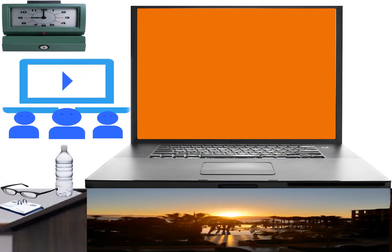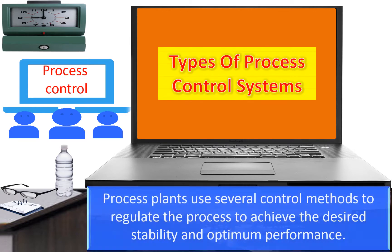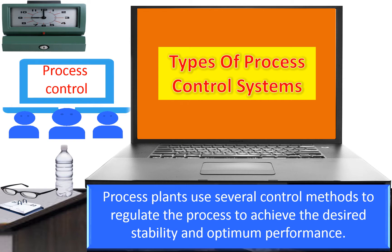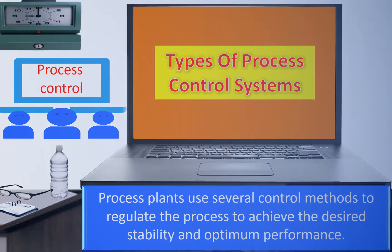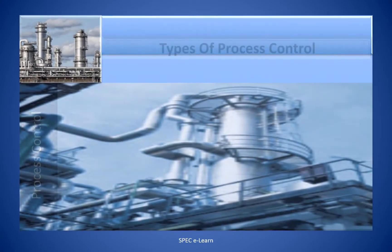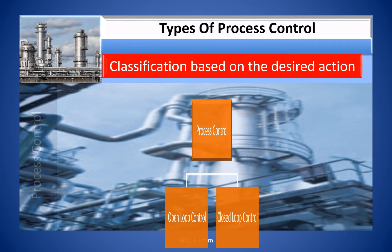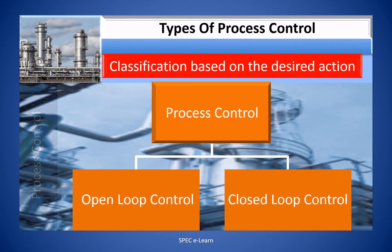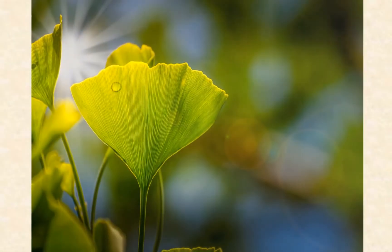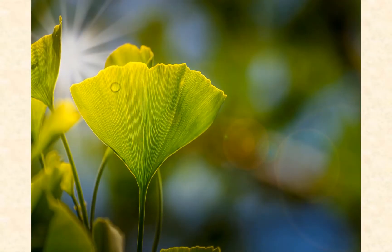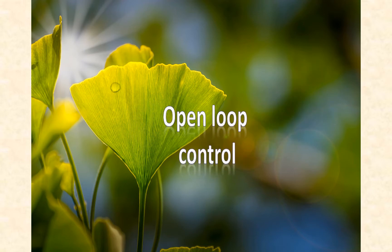Process plants use several control methods to regulate the process to achieve the desired stability and optimum performance. Process control can be classified based on the desired action you need. Accordingly, it is classified into open loop control and closed loop control. We will discuss these two systems one by one with examples.